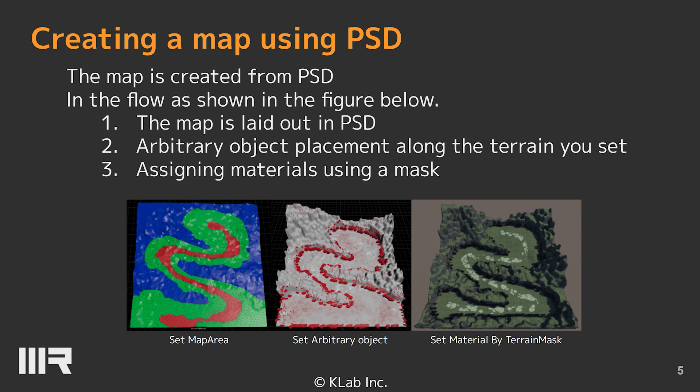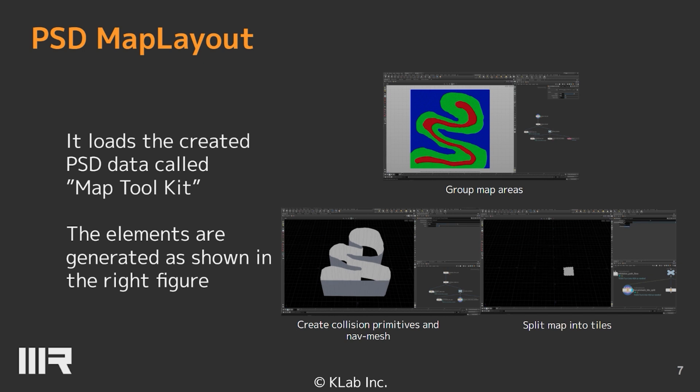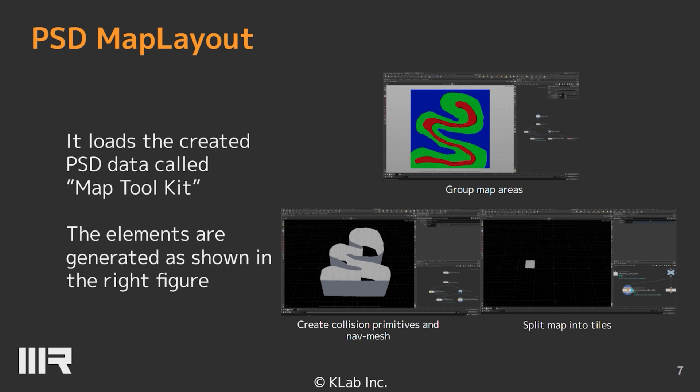The map is created from PSD in the flow shown in the figure. The map is read out by PSD and the vegetation and other features are arranged in accordance with the terrain view setup. Create asset per layer. Interest shows the center of the map. Locable shows the area where your character acts. Tile shows the unmovable area, and height per is the elevation of the tile — white parts change to black. Load the PSD data called map circuit and generate the following assets: segment each map area by nav mesh, collision wall and ground, and tile division.